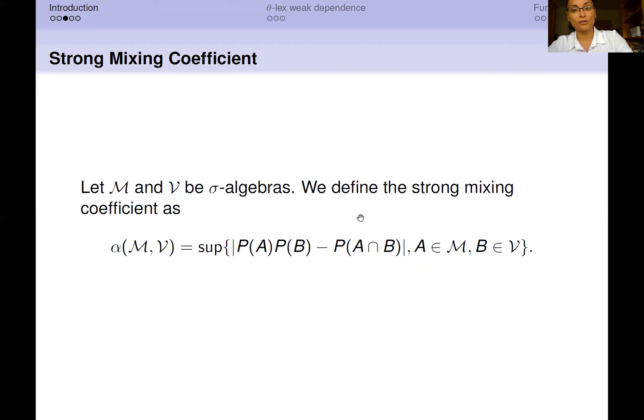It considers two σ-algebras, M and V. We define the strong mixing coefficient as α(M, V), which is defined as the supremum with respect to the sets A and B, respectively belonging to the σ-algebras M and V, of the absolute value of the difference between P(A)P(B) minus P(A ∩ B).